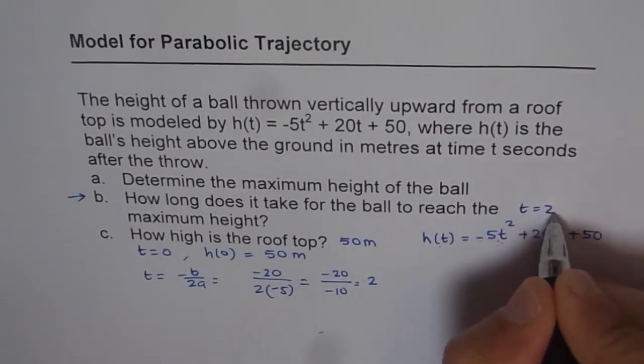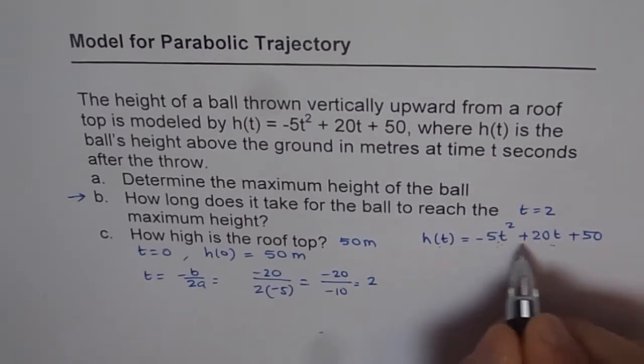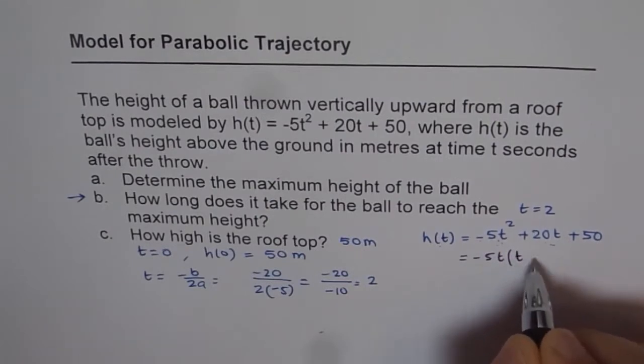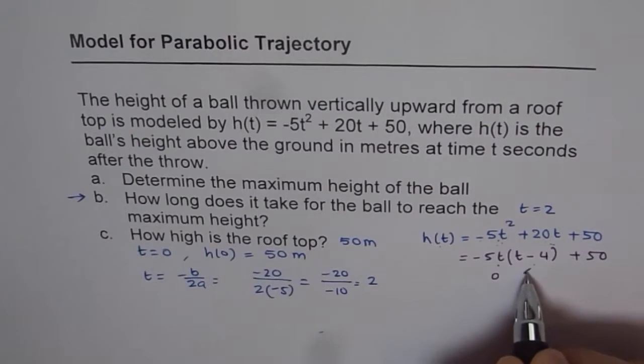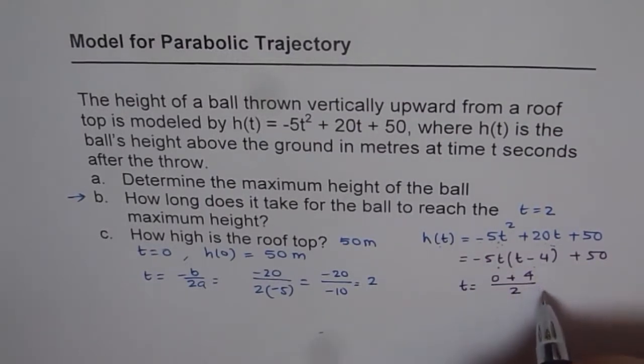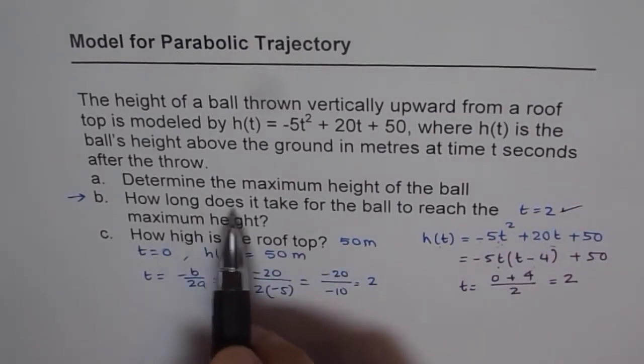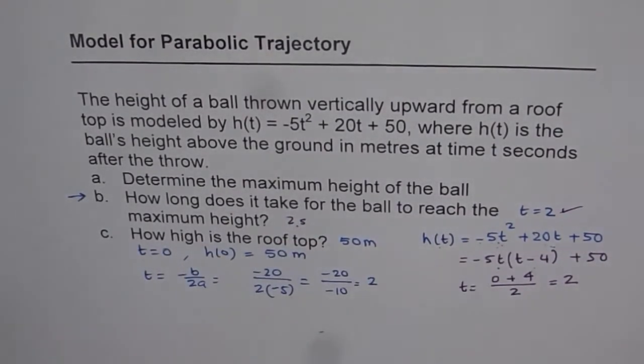Let me do the same thing using partial factoring and show you it works. If I have to partial factor it, then I can write this equation as minus 5, t is common, and I get t minus 4 inside plus 50. I have got zeros at t equals 0 and t equals 4. To get the midway, we have to add them divided by 2. So that is the time t for axis of symmetry, and that is 4 divided by 2 equals 2. So we get the same answer. How long does it take for the ball to reach the maximum height? It takes 2 seconds for the ball to reach the maximum height.